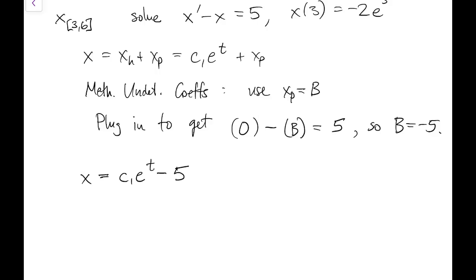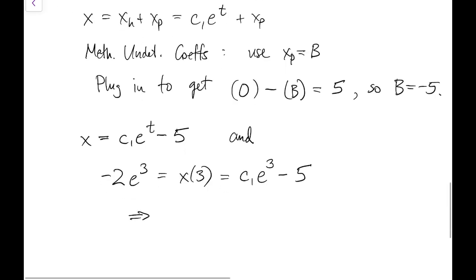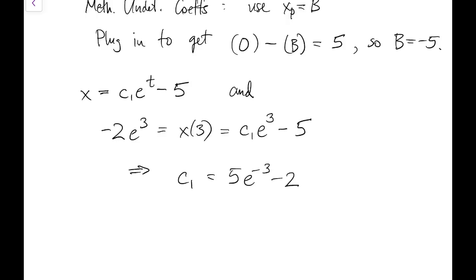That tells us that the solution over this piece is a constant times e to the t plus negative 5. I still haven't used the initial condition on this piece, so putting in t equal to 3, we know that on the one hand, this has to equal negative 2 e cubed. That came from the first piece. And on the other hand, it has to equal the expression that we just found for the second piece. So that gives us the entire solution for the second piece of the time interval.